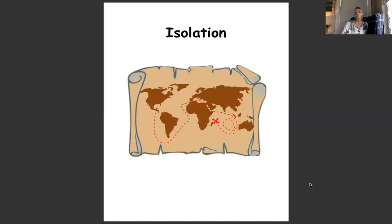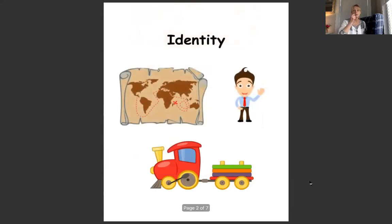There are seven phonemic awareness skills. The first is isolation, or the ability to distinguish the first, last, and middle sounds in a word — for example, what is the first sound in map? What is the last sound? What is the middle sound? The second skill is identity, which is the ability to identify pairs of words with the same beginning, middle, and ending sound — for example, of the words map, man, and toy, which two begin with the same sound?